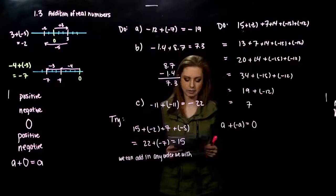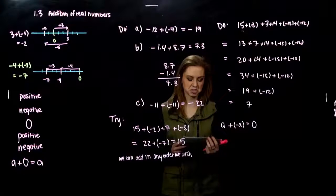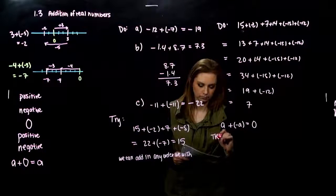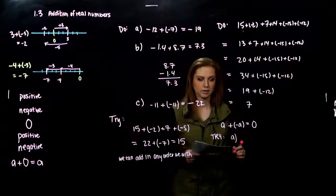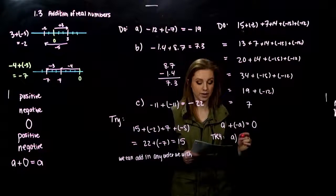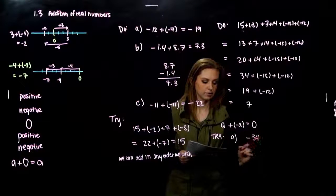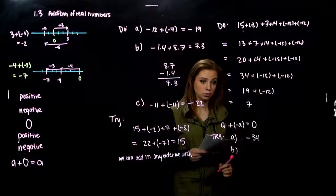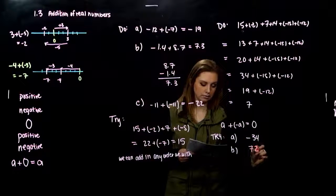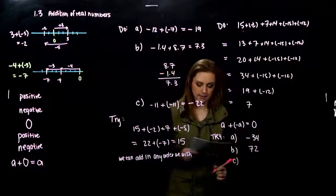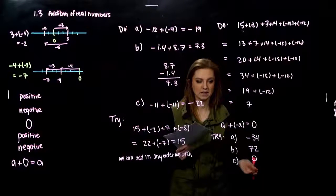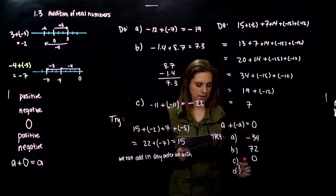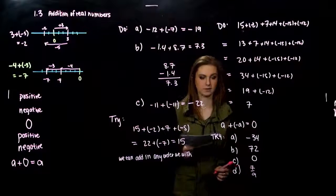So what are the opposites of these numbers? The opposite of 34, or the additive inverse, is negative 34. The opposite of negative 72 is positive 72. The opposite of 0 is 0 — it is its own additive inverse. And the opposite of negative 7 ninths is positive 7 ninths.